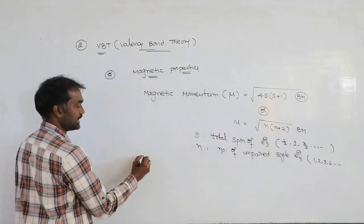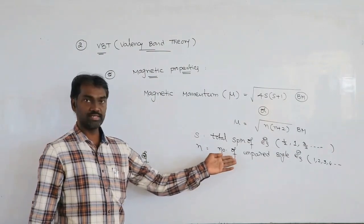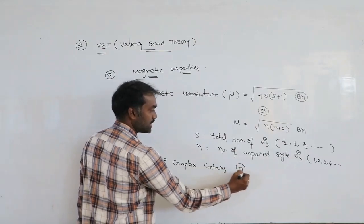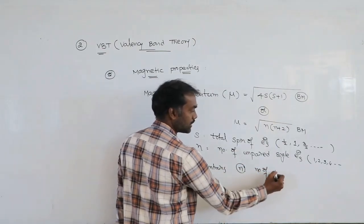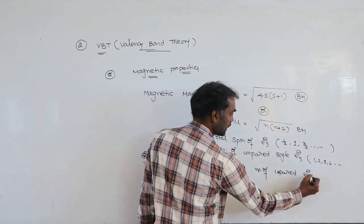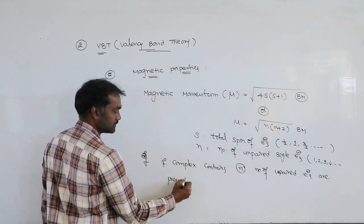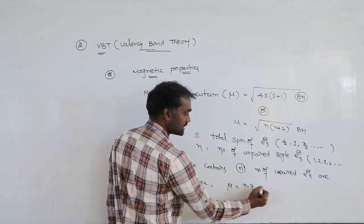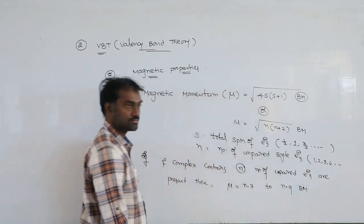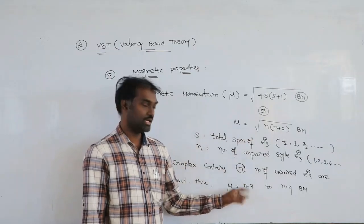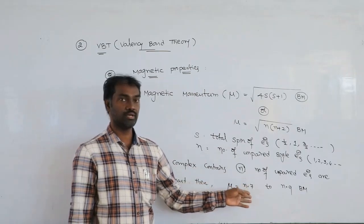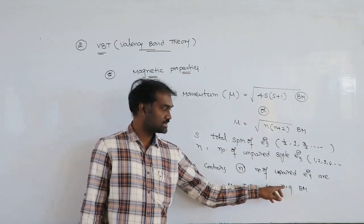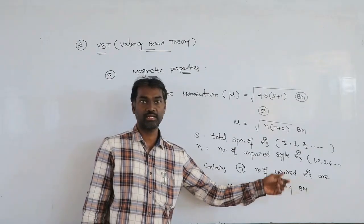For entrance exam purposes, just count the unpaired single electrons. If the complex contains n number of unpaired electrons, you can directly write n.72 to n.9 Bohr magnetons. For 1 unpaired electron: 1.7 Bohr magnetons; 3 unpaired electrons: 3.8 Bohr magnetons; 5 unpaired single electrons: 5.9 Bohr magnetons directly.